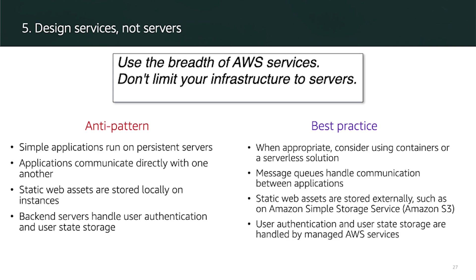The next best practice is to design services, not servers. Although Amazon EC2 offers tremendous flexibility, it shouldn't always be the first option. There are many other choices like containers or serverless solutions which can be more appropriate for your application. With AWS serverless solutions and managed services, you don't need to provision, configure, and manage entire Amazon EC2 instances. Examples include AWS Lambda, AWS Simple Queuing Service, Amazon DynamoDB, Elastic Load Balancing, Amazon Simple Email Service, and Amazon Cognito.